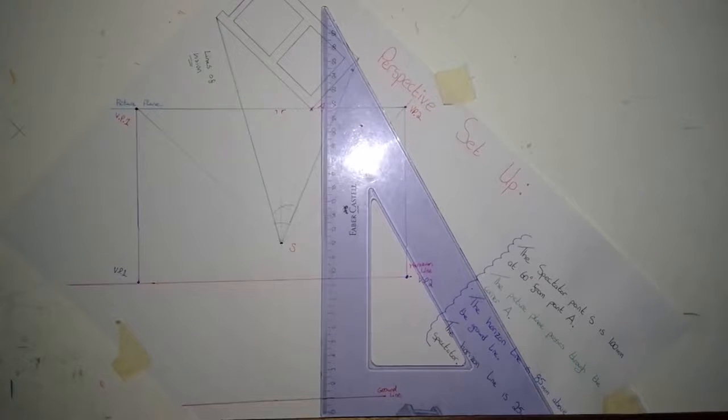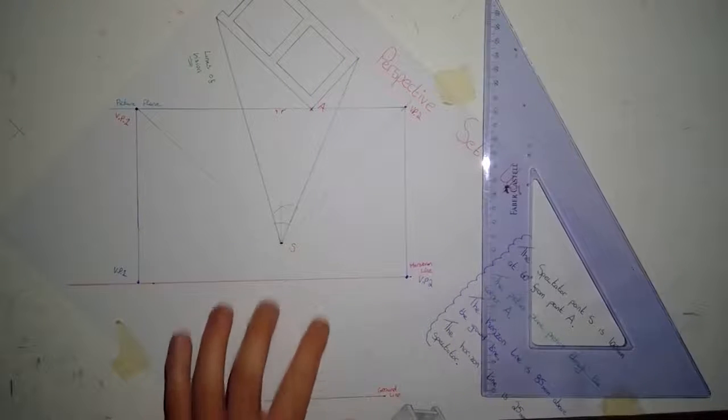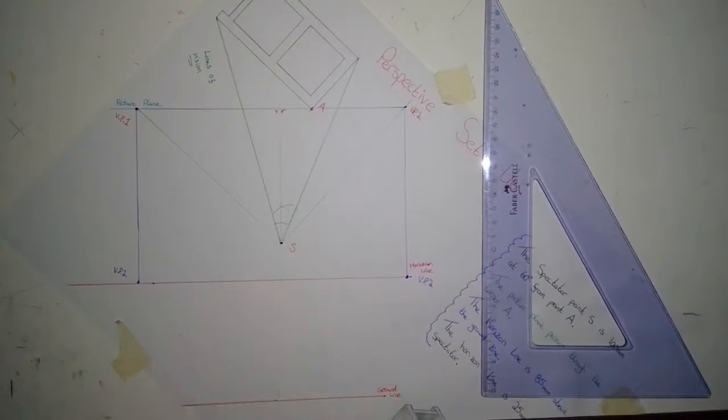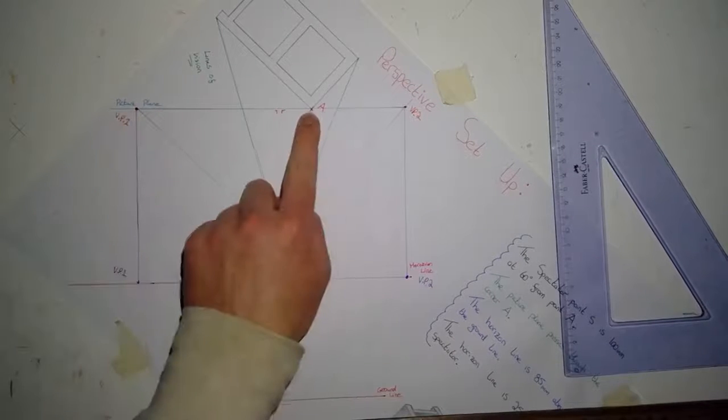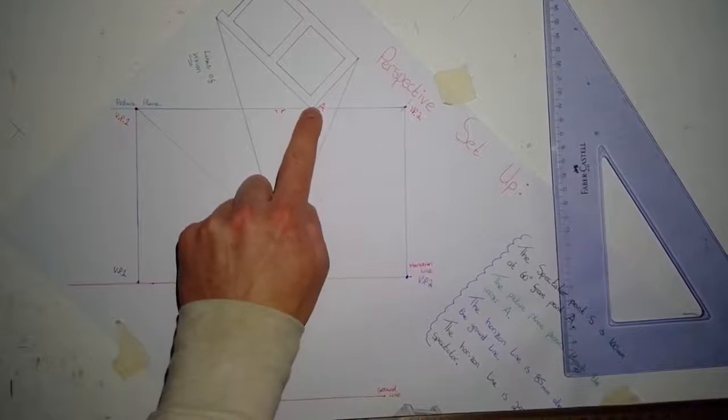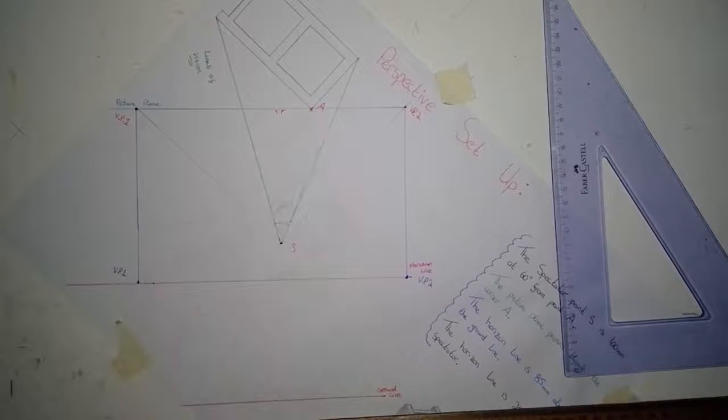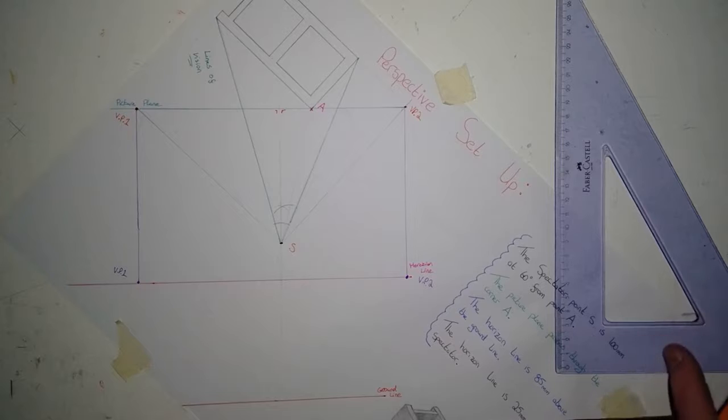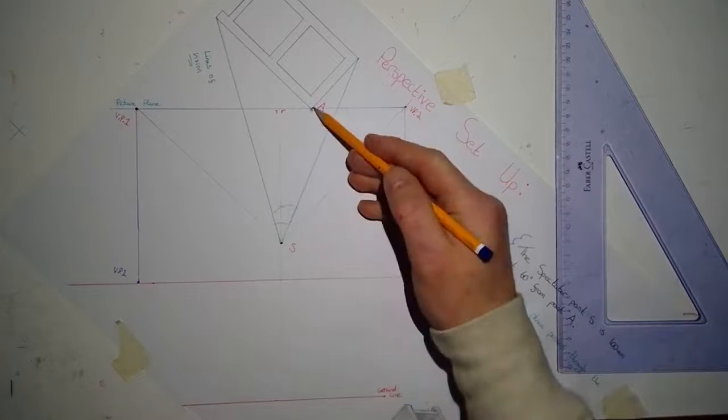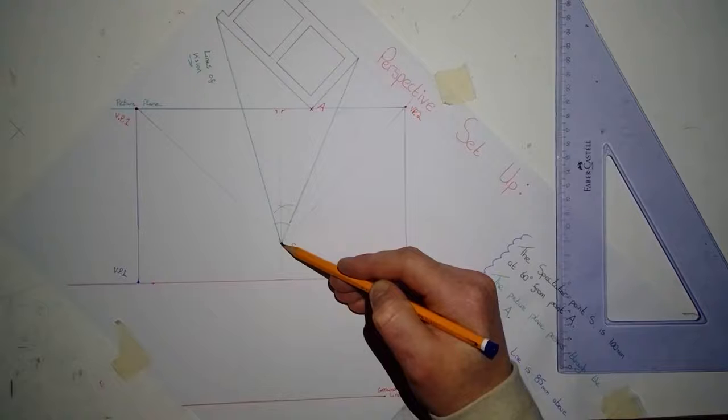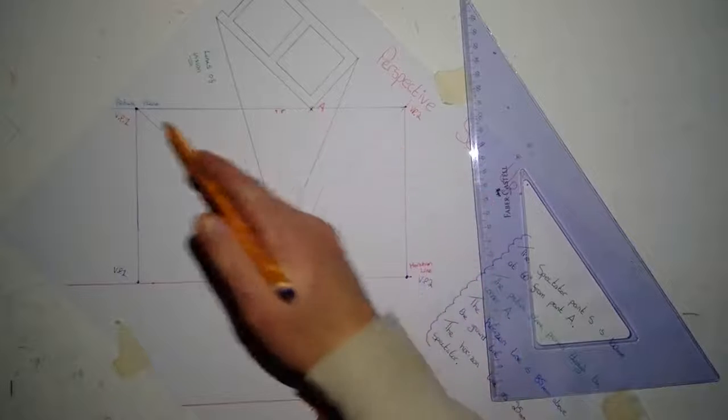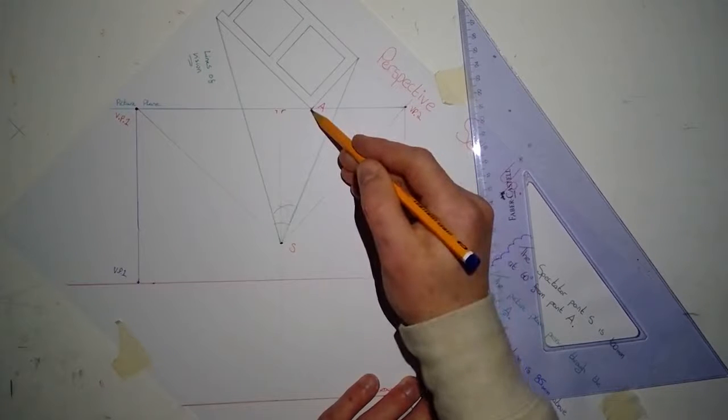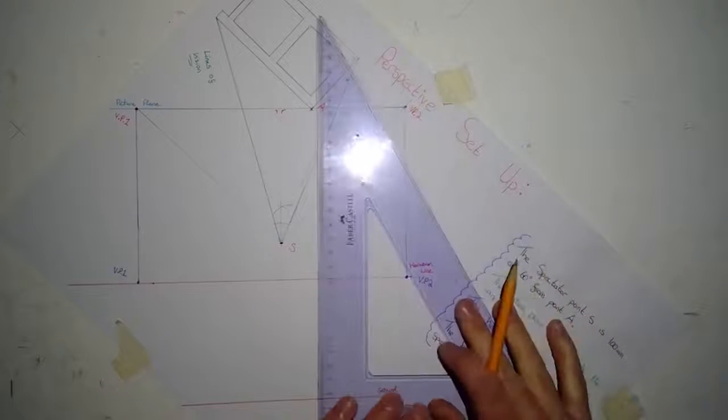The next step I need to do is get a line down here in my ground line that I can measure my vertical distances off of. As the picture plane crosses through corner A, I can use this corner as a height line. To get this line down to the ground line, the first thing I need to do is join A to the spectator.